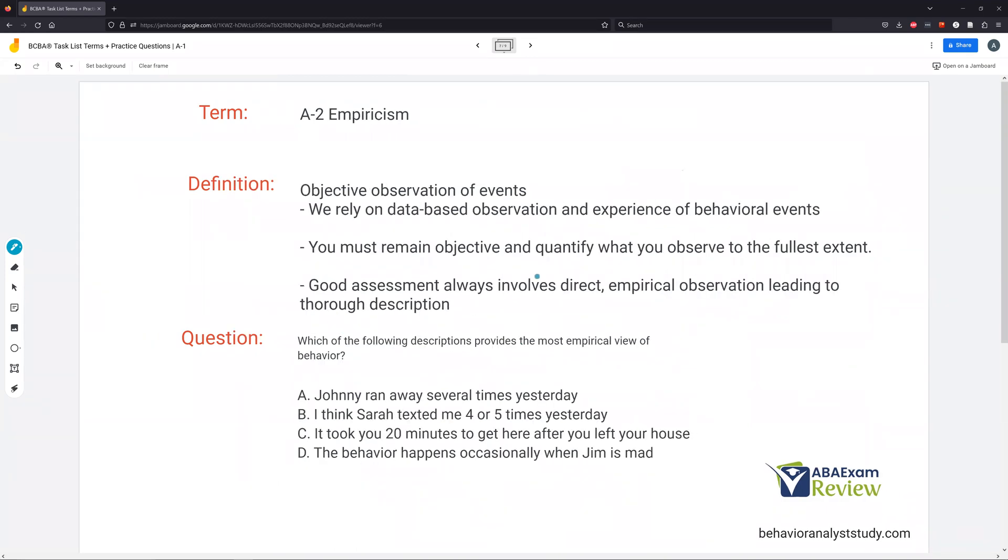Empiricism. Empiricism is extremely important. Empirical evidence. This is empirically validated. This is empirical research. What does that mean? Well, it just means an objective observation of events. We're relying on data-based observation and experience of behavioral events. Not our opinions, not our subjective thoughts on what happened, not on just conversation about what happened, but data-based observation and experience. We're observing what's happening. You've got to be objective, and you've got to quantify what you observe. That's huge. That's where measurement comes in. If we're not quantifying what we observe, we're just shooting in the dark. Good assessment always involves direct empirical observation. We never just want to go with an indirect observation and write a treatment plan. We need direct empirical observation, meaning we've observed it ourself, and we've quantified it ourself, and our treatment is based on what we've observed and our experiences of those events.